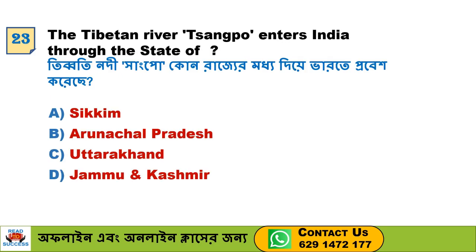Next question: The Tibetan river Tsangpo enters India through the state of — Option A. Sikkim, Option B. Arunachal Pradesh, Option C. Uttarakhand, Option D. Jammu and Kashmir. Option B, Arunachal Pradesh, is the correct answer.